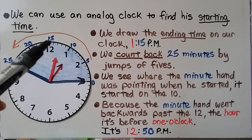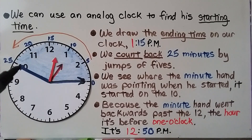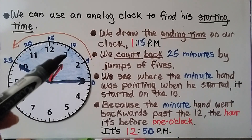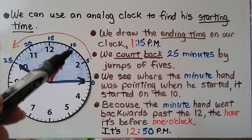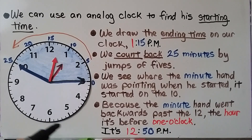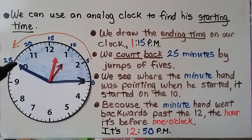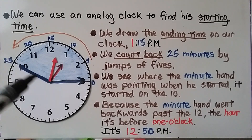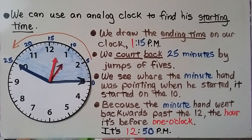Starting at the 12, we can count by fives: 5, 10, 15, 20, 25, 30, 35, 40, 45, 50. When the minute hand is pointing to the 10, we know the minutes are at 50. So it's 12:50.